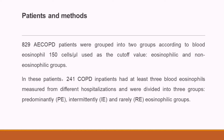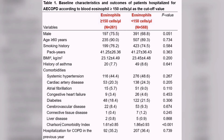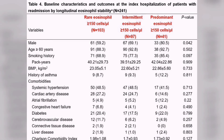829 AECOPD patients were grouped into two groups according to blood eosinophilia, with 150 cells/µL used as a cut-off value: eosinophilic and non-eosinophilic groups. Among these patients, 241 COPD patients had at least three blood eosinophilia measurements from different hospitalizations and were divided into three groups: predominantly, intermittently, and rarely eosinophilic groups.